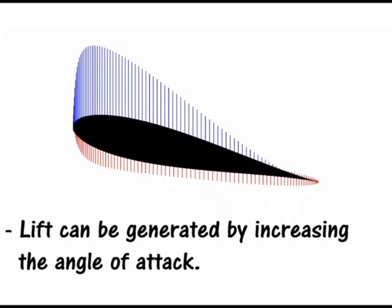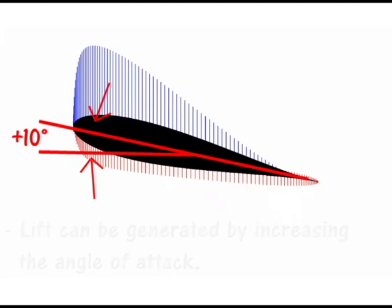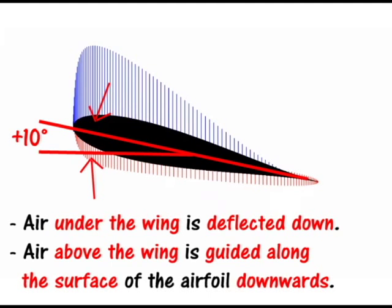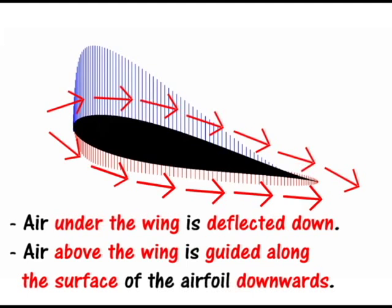Lift can be generated by increasing the angle of attack. By doing so, air under the wing is deflected down, and air above the wing is guided along the surface downwards.